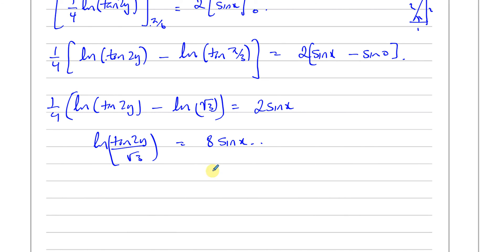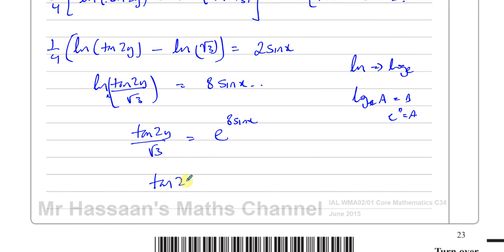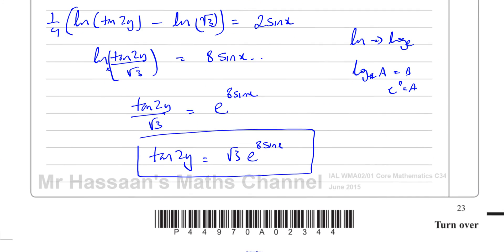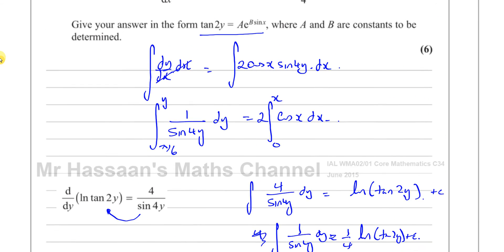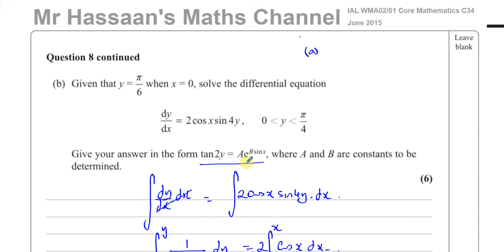Since ln means log base e, the equation ln(tan(2y)/√3) = 8·sin(x) means tan(2y)/√3 = e^(8·sin(x)). Therefore tan(2y) = √3·e^(8·sin(x)). Since the answer is expressed as tan(2y) = a·e^(b·sin(x)), we can see that a = √3 and b = 8. That's the answer to this differential equations question from June 2015.